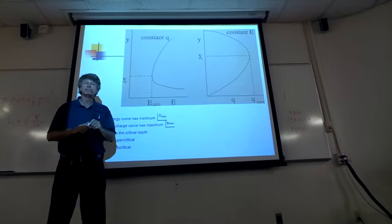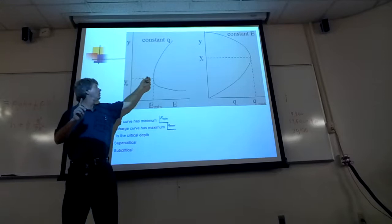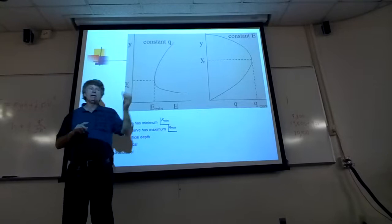Except right there. And we call that the critical point. And we call the flow at that point critical flow. Critical flow is where the point at which you can change the depth of the stream up and down a little bit without changing energy at all.